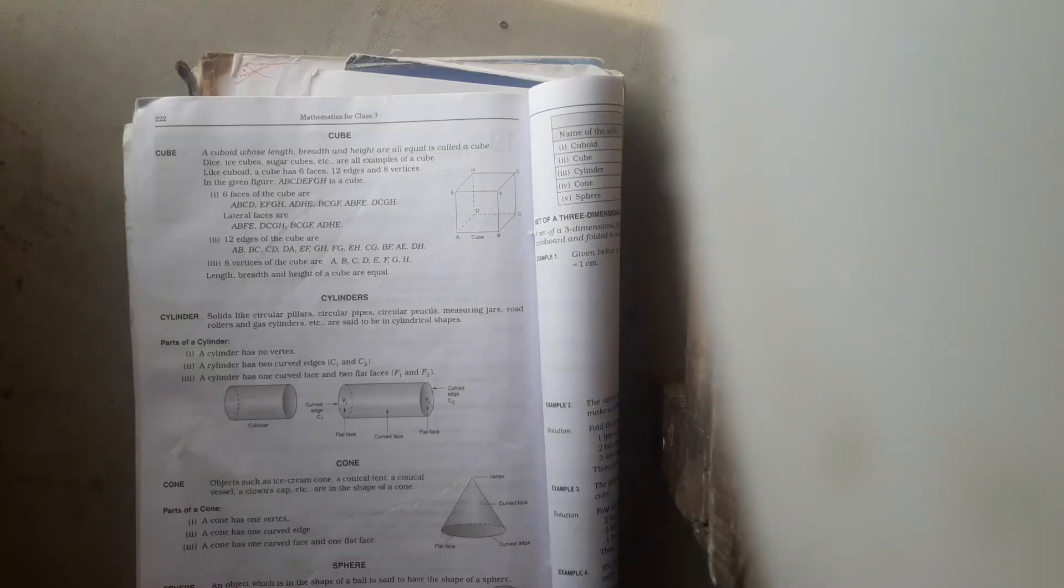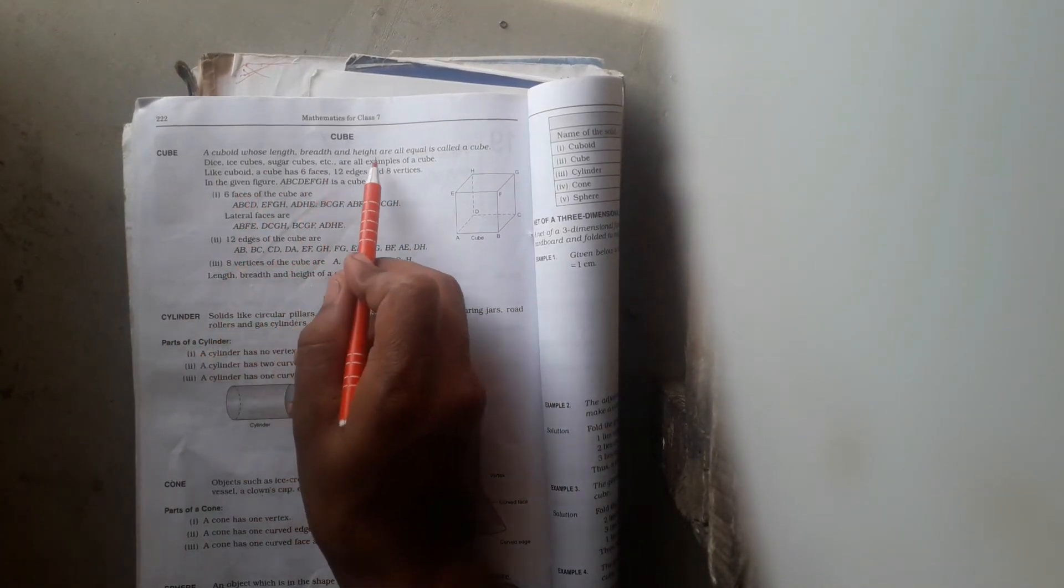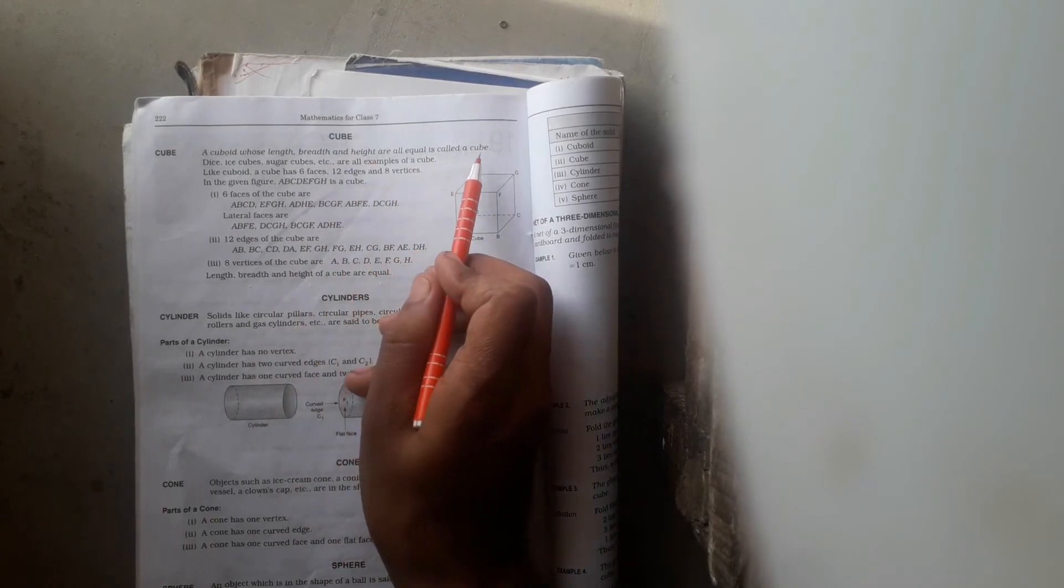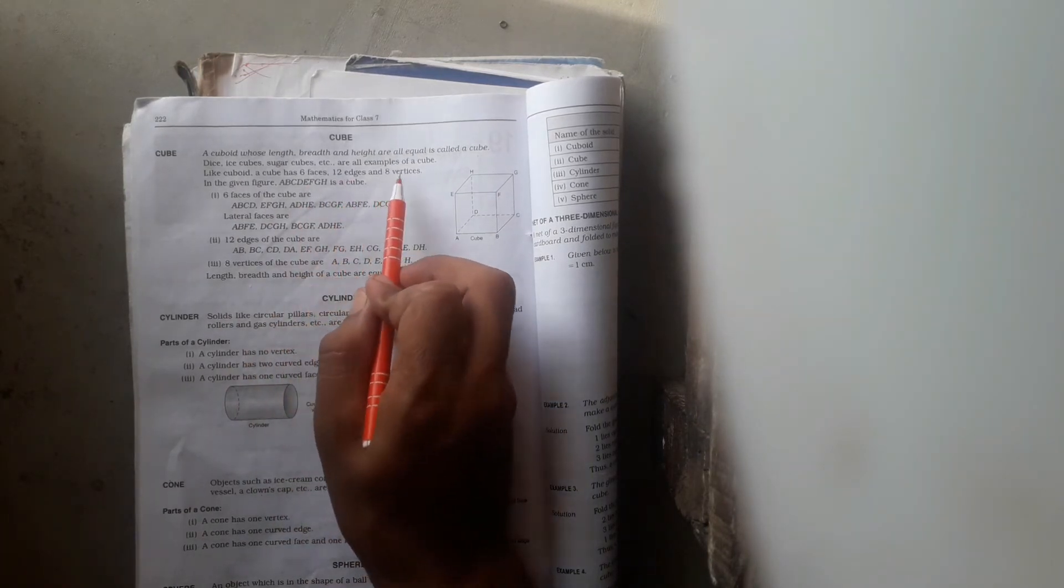Clear students? See this figure. This is the figure of cuboid. A cuboid whose length, breadth and height are equal is called a cube. In cube: six faces, 12 edges and eight vertices. Clear students?